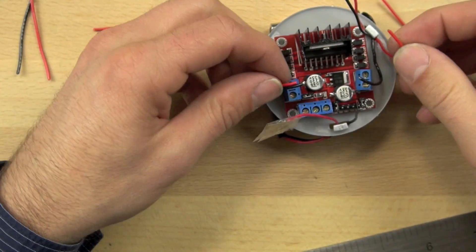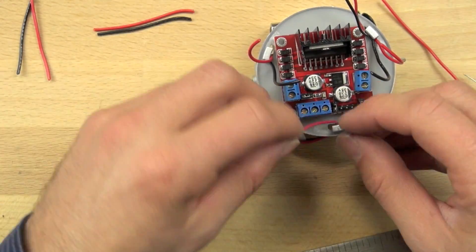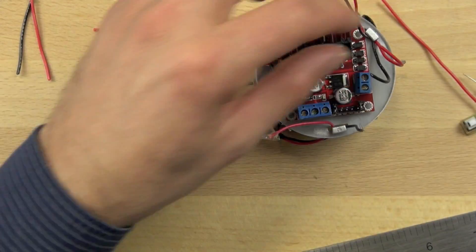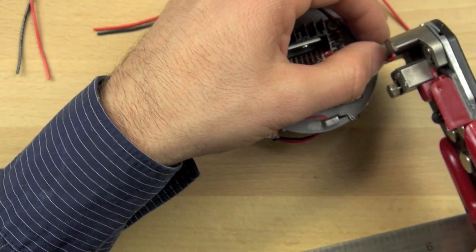And what we'll do is we're going to strip off about a quarter, a little less than a quarter, about an eighth inch of insulation off the edge of the wire.